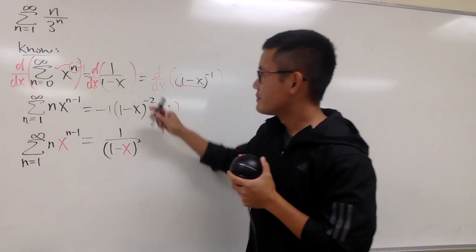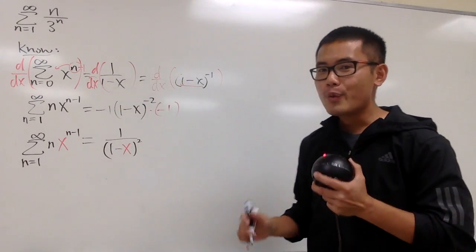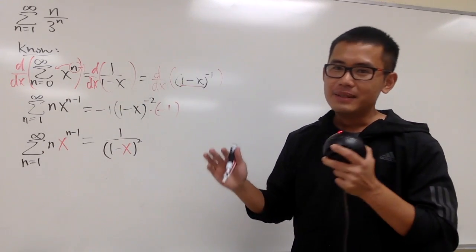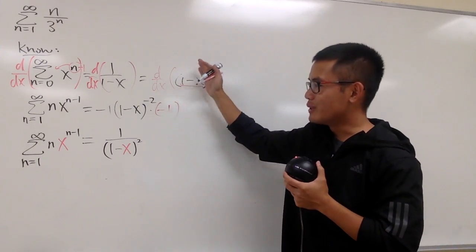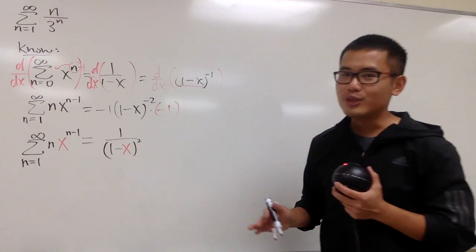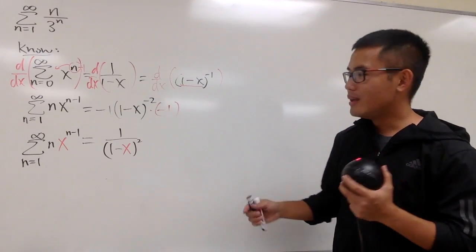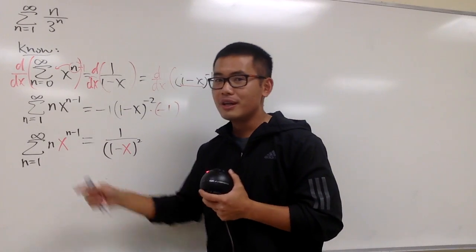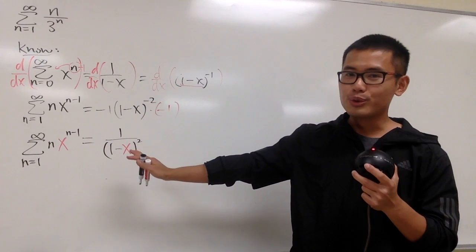And remember, earlier for our best friend, that is when x is in between negative 1 and 1. And when you differentiate that, the radius of convergence stays the same, so you can still go out to negative 1 and 1. And if I plug in x equals 1 third, that is certainly on the interval of convergence, so we can totally do that.